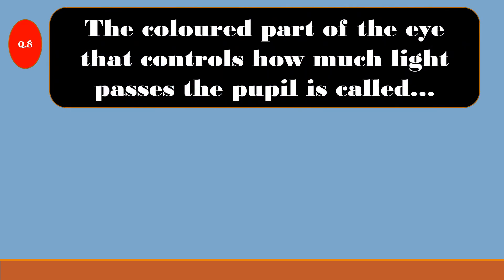Question No. 8: The colored part of the eye that controls how much light passes through the pupil is called?